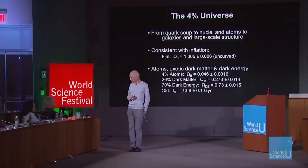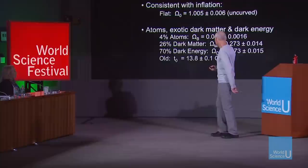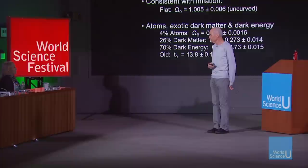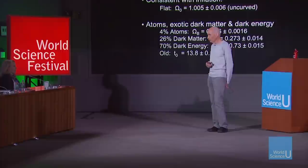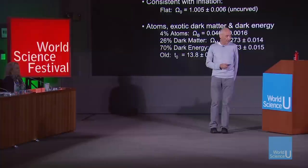We now live in the 4% universe. We can trace the history of the universe from before quark soup to the galaxies and stars we see today. We have a universe that's uncurved — it has the critical density, the omega parameter equals 1. The composition: the stuff made out of atoms is only 4%. We have dark matter, which we think is not atoms, at about 26%. And then we have dark energy at about 70%.